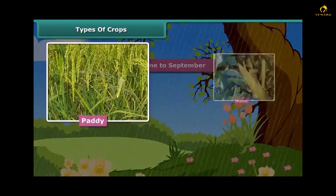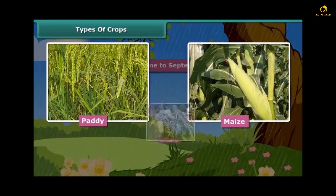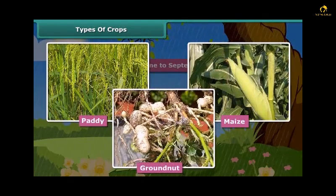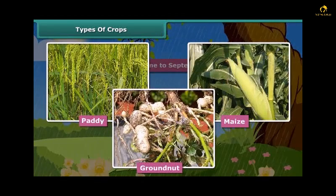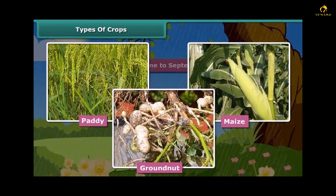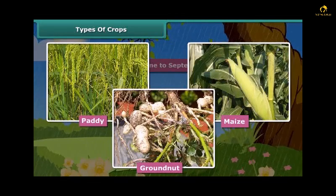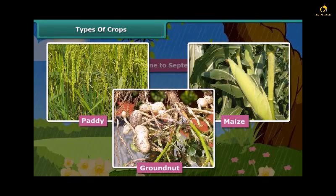Kharif crops are usually grown in the rainy season, generally from June to September. Paddy, maize, groundnut, etc. are some common examples of Kharif crops. To grow crops, various activities are performed, which are known as agricultural practices. Let us know them one by one in detail.